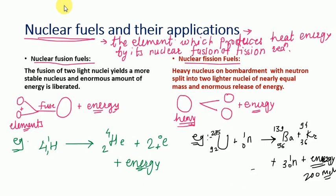Nuclear fusion fuel — where smaller nuclei combine to form a larger one with energy emission — is considered more superior and has more applications than nuclear fission fuel. In nuclear fission, when heavy elements are converted into lighter ones, a tremendous amount of energy is emitted; however, controlling this reaction is very difficult. Therefore, nuclear fusion fuel is considered more superior than nuclear fission fuel.